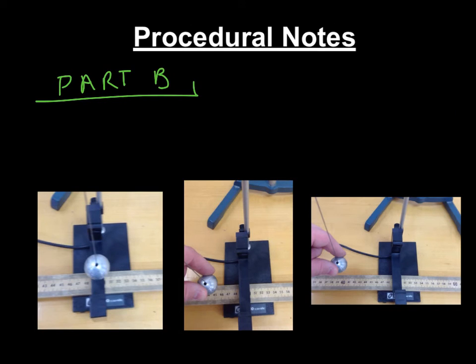For part B, you are going to use amplitudes. So the very first thing you have to do is center the pendulum. Make sure that this beam right here is directly lined up over the 50 mark. Then you pull it back some amplitude. In this case, this would be five centimeters here. This would be ten centimeters right here. And you are going to let it go.